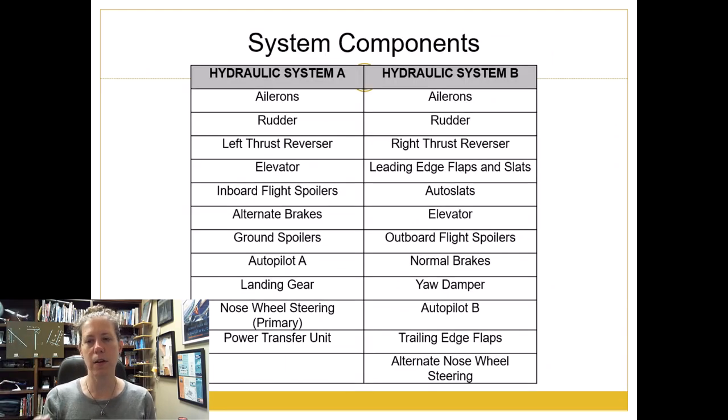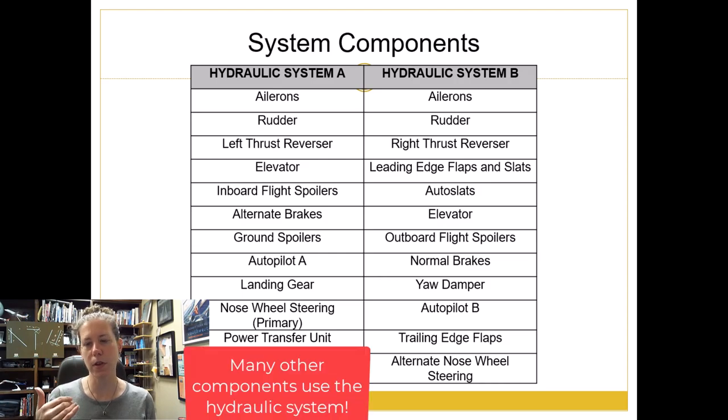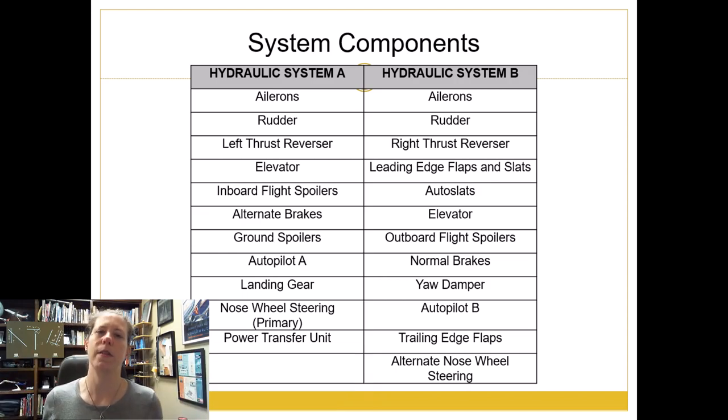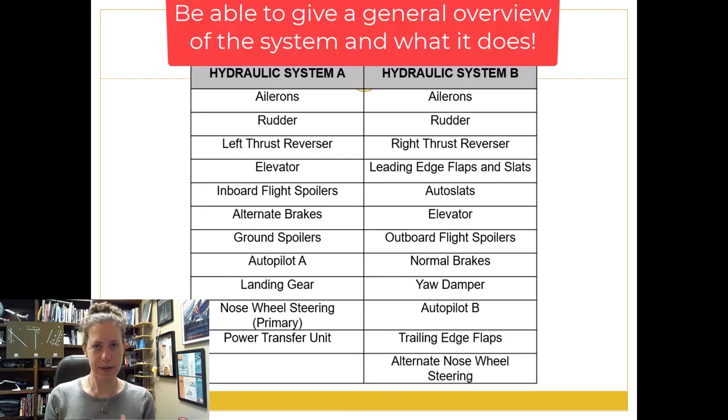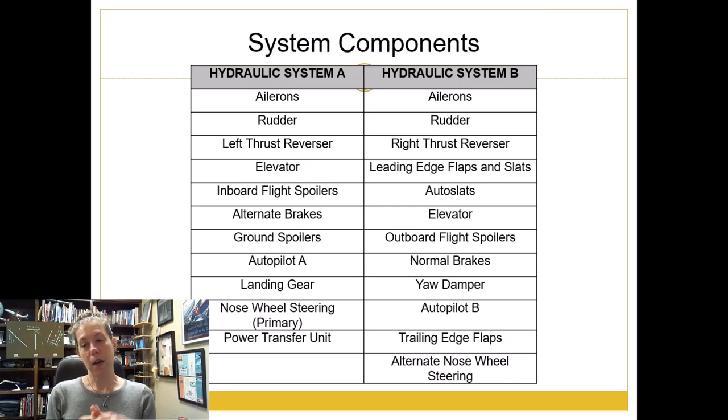So here's a list of all the different components for the 737 that are on System A and that are on System B. Again, I wouldn't expect somebody to have to illustrate all this for an oral and practical test, but it is good to be aware so that when the examiner asks you about the hydraulic system, you can say that there's System A, there's System B, there's the standby system, and that they operate the flight controls, they operate the flaps, the slats, the brakes, the landing gear system, and steering of the aircraft on the ground, and a variety of other components.